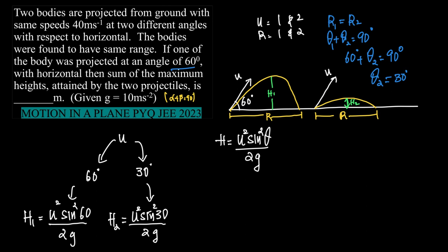and h2 is equal to u square sine square 30. And what are we asked to find out? The sum of the maximum heights, which means we need to find out h1 plus h2, which actually gives us u square sine square 60 plus, okay let us split it by 2g, plus u square sine square 30 the whole upon 2g.